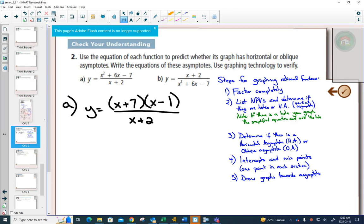Okay, so we list our non-permissible values, x plus 2, x can't equal negative 2. Notice nothing simplifies. Since nothing simplifies, that tells us that the non-permissible value is going to be a vertical asymptote and not a hole.